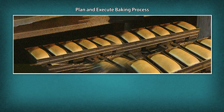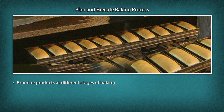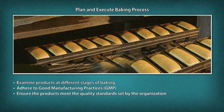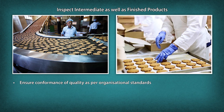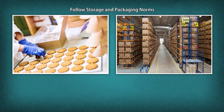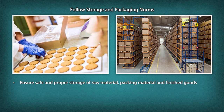Plan and execute the baking process. Examine products at different stages of baking. Adhere to Good Manufacturing Practice (GMP) and ensure the products meet the quality standards set by the organization. Inspect immediate as well as finished products to ensure conformance of quality as per organizational standards. Follow storage and packaging norms; ensure safety and proper storage of raw material, packing material and finished goods.